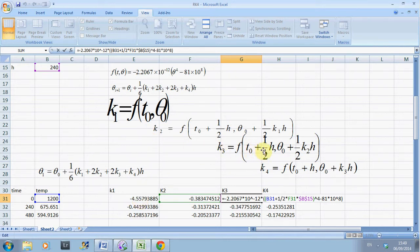There's a half H. There's a half K2H. Same as before, K2 is in F31.